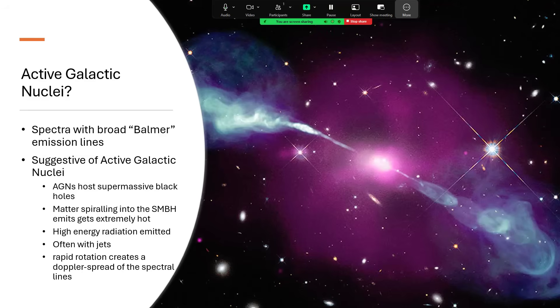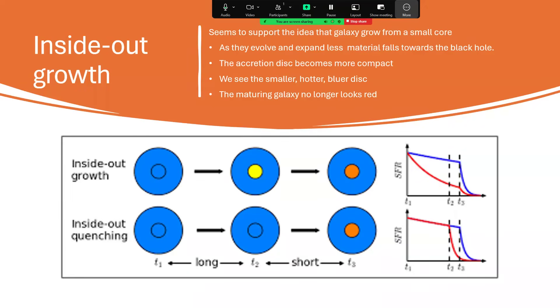And what this is pointing to is a process of inside-out growth. There's always been two competing theories about how galaxies grow, the inside-out growth model or the inside-out quenching model, and the predictions of those are different for the way that the color of the galaxy should change. In the lower model, the quenching model, the red and blue coloration should remain the same for a long time until the latter stages, whereas in the inside-out growth method, the red color should decline much more rapidly than the blue, and it seems that that's what's happening here.